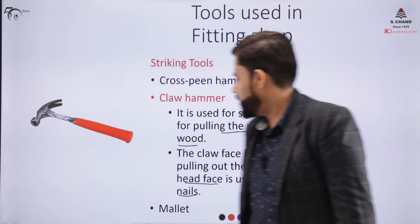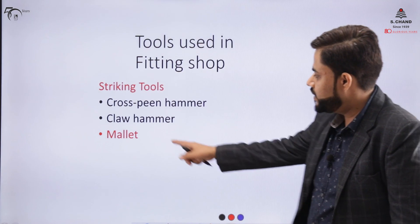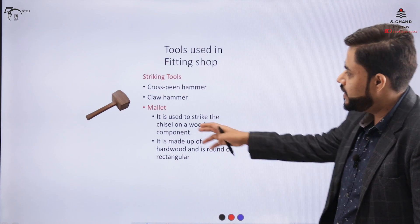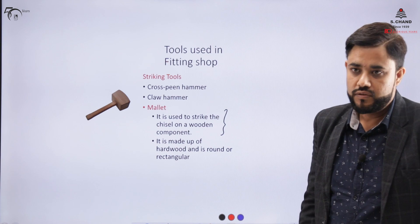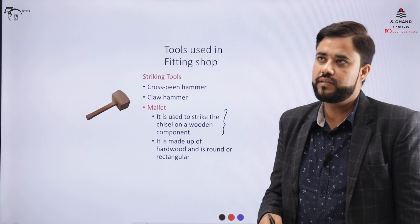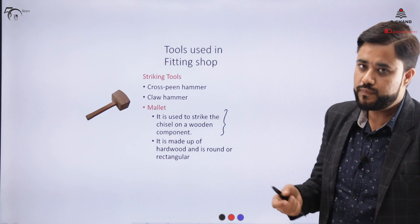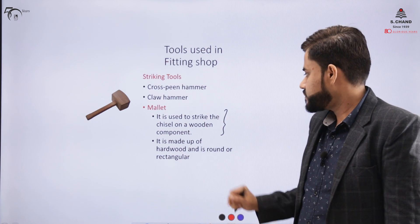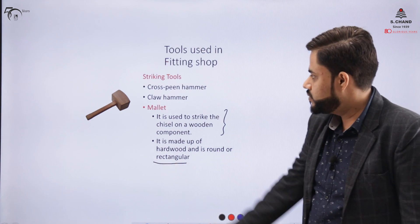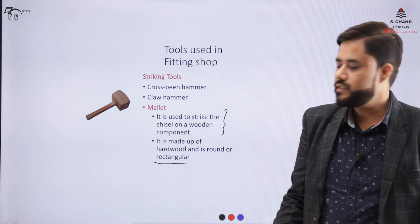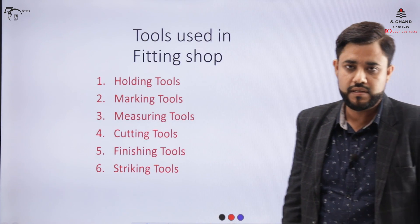The third category is the mallet. The mallet is used to strike a chisel on a wooden component. The chisel belongs to the cutting tool category and is used to remove material from a surface. The mallet is majorly made of hardwood and can be rounded or rectangular in shape.